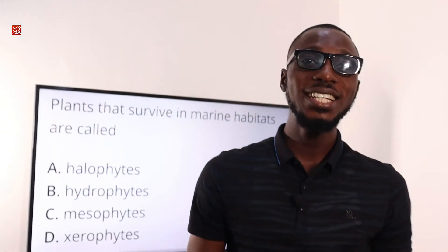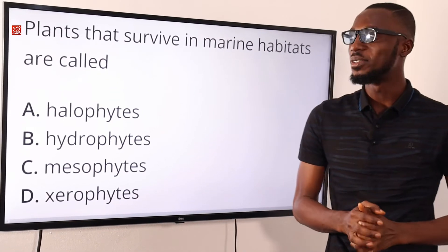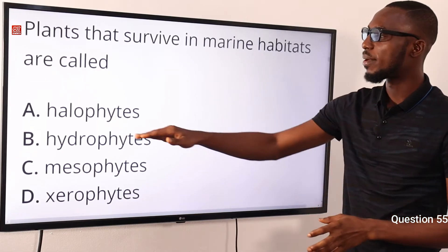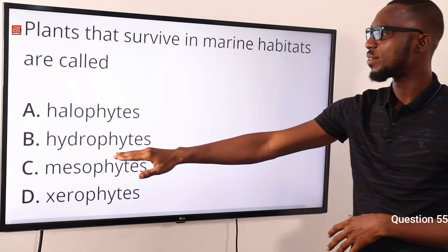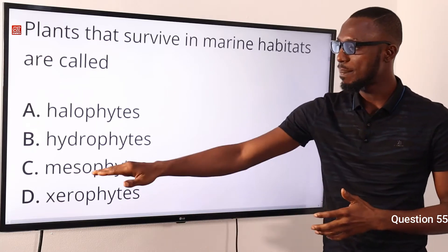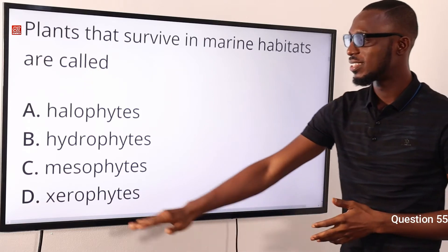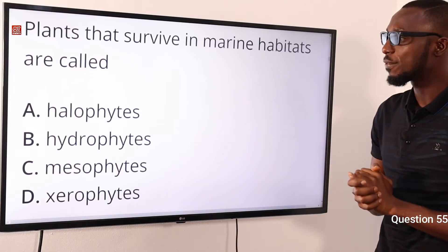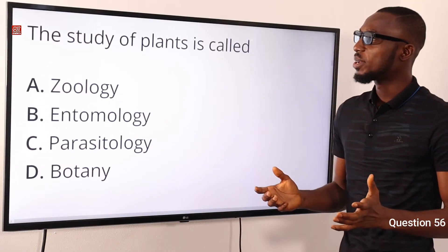Welcome back to MySchool channel. In this video clip we are solving questions 55 to 68. Question 55: plants that survive in marine habitats are called what? When you talk about halophytes, 'halo' means salt, so salty environment. Hydrophytes means a well-watered or aquatic environment. Mesophytes just need an adequate supply of water. Xerophytes refer to a dry environment. So the correct option is option B for hydrophytes.